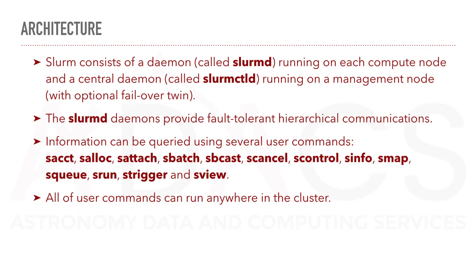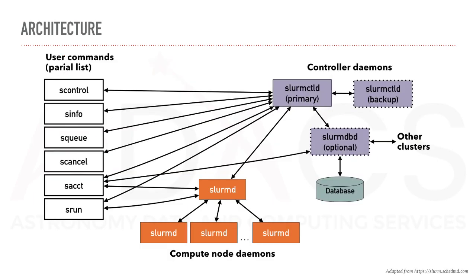SLURM consists of a daemon called SLURMD running on each compute node, and a central daemon called SLURMCTLD running on a management node. The SLURM daemons provide fault-tolerant hierarchical communications. Information can be queried using several user commands, and all user commands can be run anywhere in the cluster. Here you can see a topology of the system, showing how user commands are linked to controller daemons and the compute node daemons.